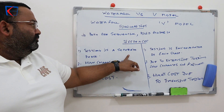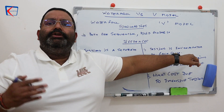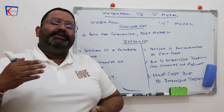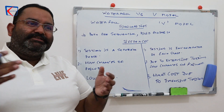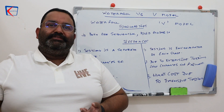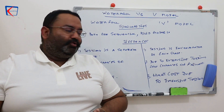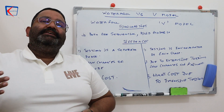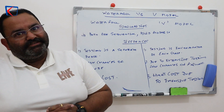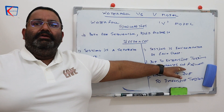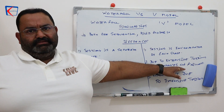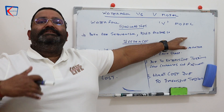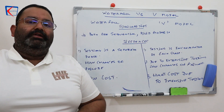Differences: in the waterfall model, testing is a separate stage, but in the V model, testing is incorporated at each stage — when we get the requirements we write acceptance test cases, when we do system design we write integration test cases, and so on. Since the waterfall model has less testing, it has higher chances of failure. In the V model, extensive testing at each phase makes it a more successful model with very low chances of failure.